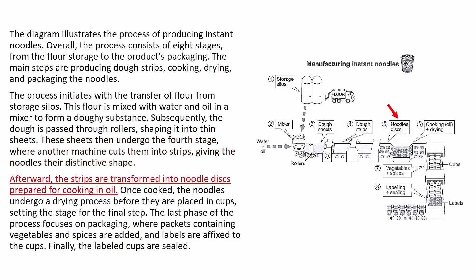Step five, afterward the strips are transformed into noodle discs, prepared for cooking in oil. Step six, once cooked, the noodles undergo a drying process before they're placed in cups, setting the stage for the final step. Now step seven and eight. The last phase of the process focuses on packaging, where packets containing vegetables and spices are added and labels are fixed to the cups. And now the last one, sealing. Finally, the labeled cups are sealed.